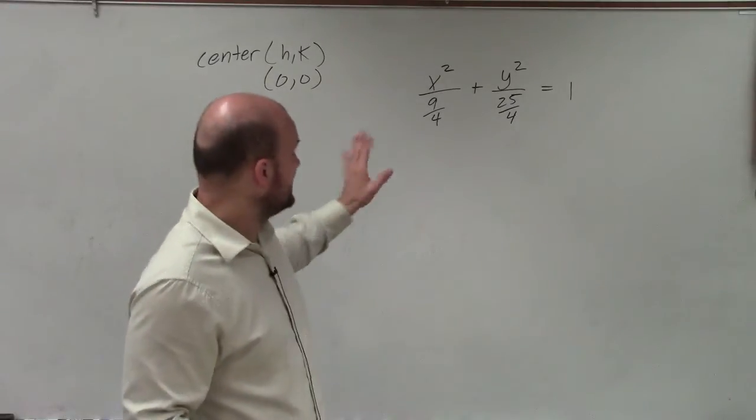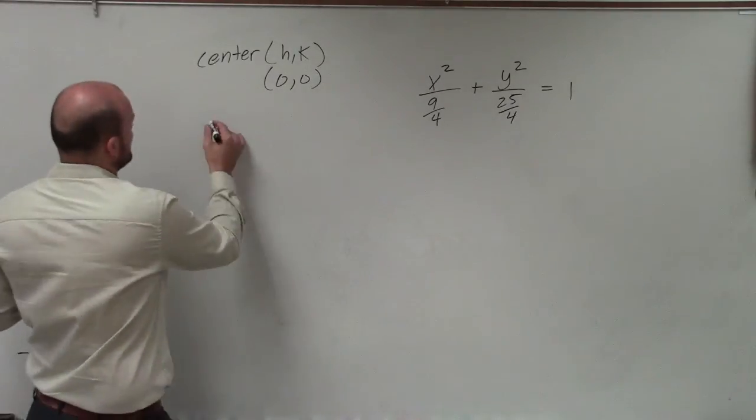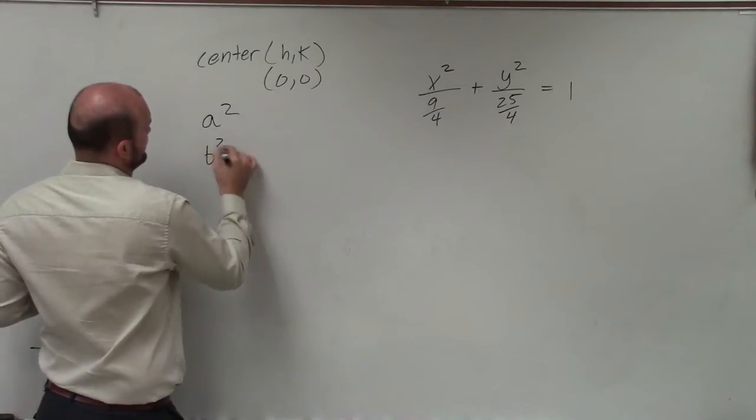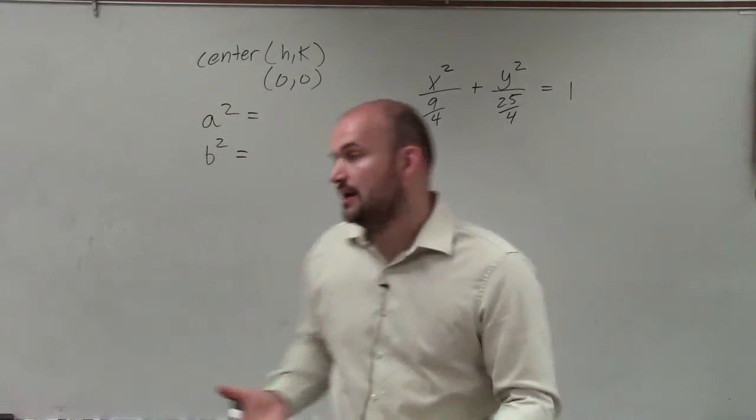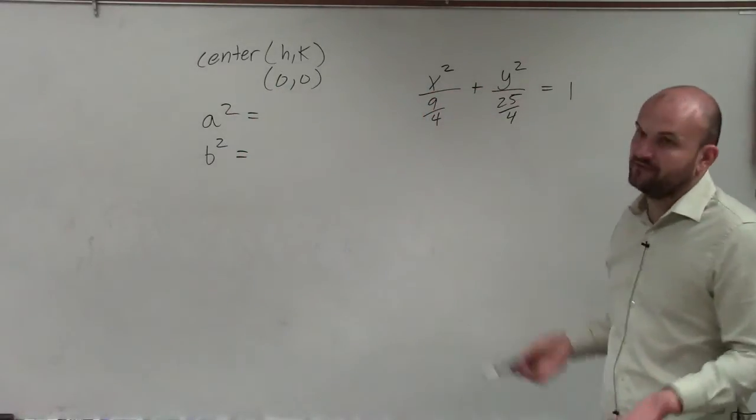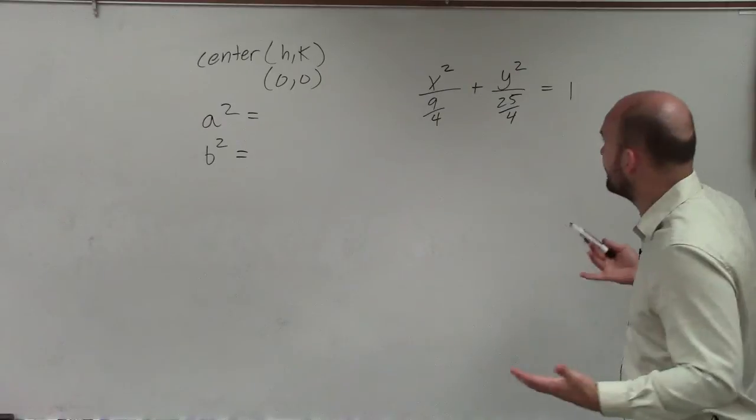The next thing is I need to determine my a² and my b². Now, remember, when we're dealing with an ellipse, the a² is going to be the larger of your two values. And you can see we both have fractions. But let's just go and take a look. What is going to be your larger fraction?